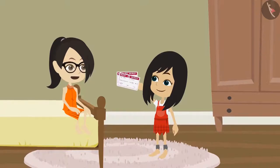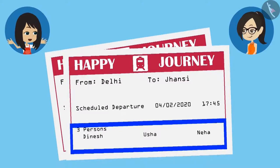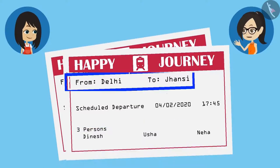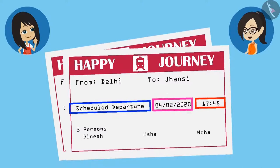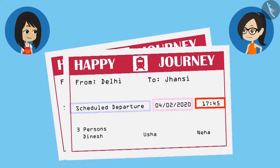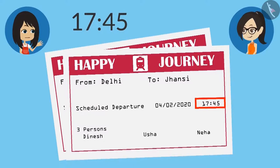Let's see what all are mentioned on the ticket. Look, it has Mummy, Papa's and my name written on it. It is also written that this train will go from Delhi to Jhansi. And what is this written? Scheduled departure. What is the meaning of this? I don't know, but the date is written in front of it, and something else is written as time. But it is not time — time must be written in the format of time. The time is written as 45 minutes past 17, and a.m. or p.m. is also not written along with it.